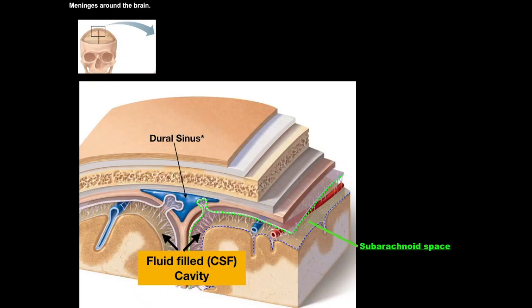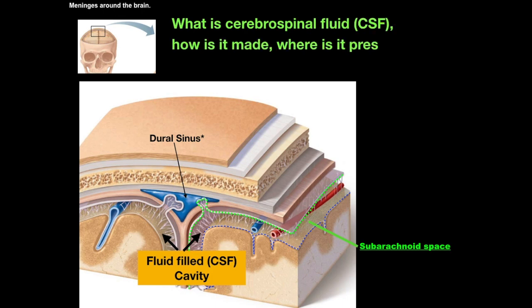When speaking of the meninges, the brain is floating in cerebral spinal fluid that's contained within the subarachnoid space. Today we'll deal with that cerebral spinal fluid — how it is made, where it is located, and what its function is. The CSF surrounding the brain in the subarachnoid space is one location, but CSF is also made and flows within cavities inside the brain.